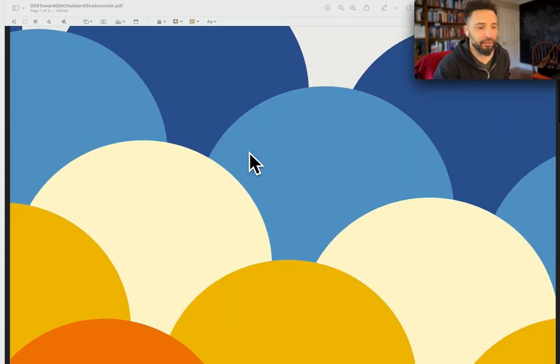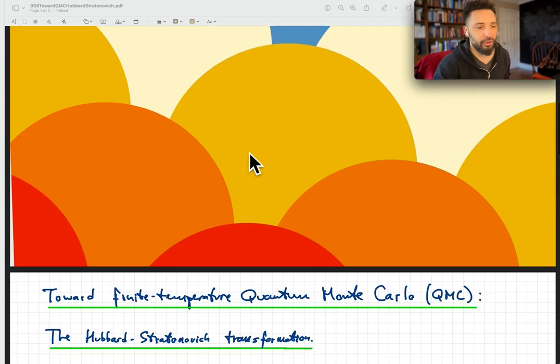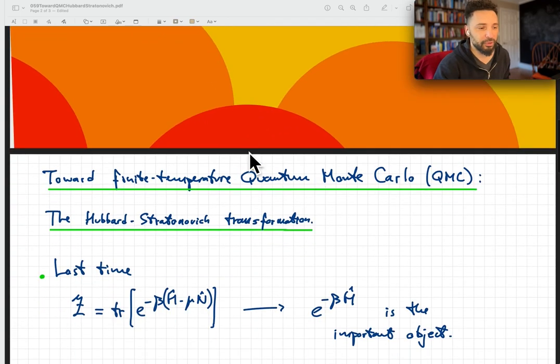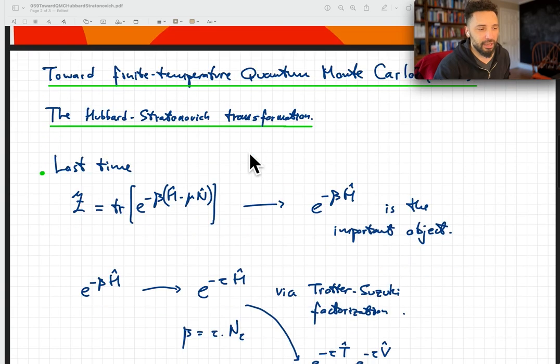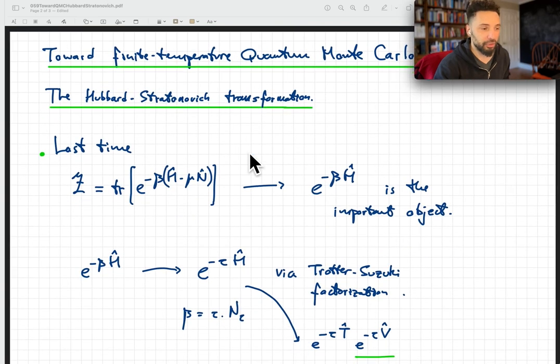This is the second episode of this series on building towards finite temperature quantum Monte Carlo. If you recall last time when we talked about the Trotter-Suzuki decomposition, I tried to convince you that this is the main object that we're interested in.